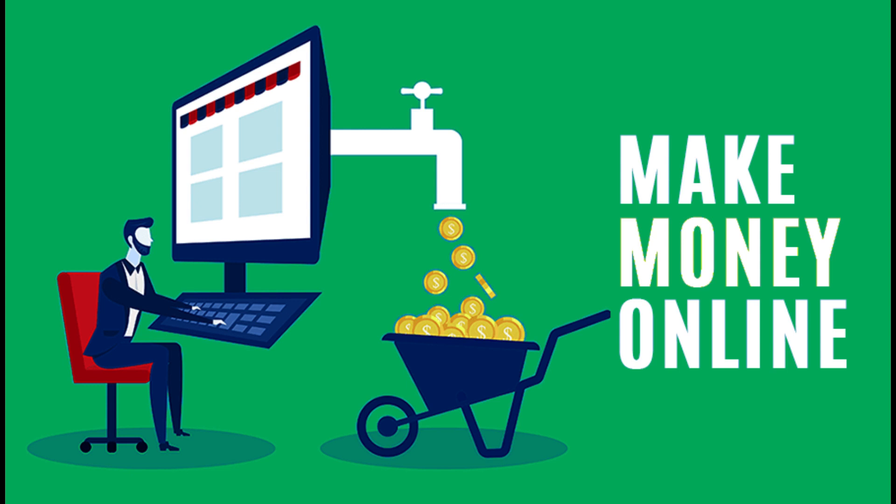How to get started. Once you've created an account, set your availability, and chosen your services, you're ready to start getting tasks. You can browse the available tasks and apply for the ones that you're interested in. If you're selected for a task, you'll need to communicate with the client to coordinate the details. Once the task is complete, you'll be paid through the TaskRabbit platform.